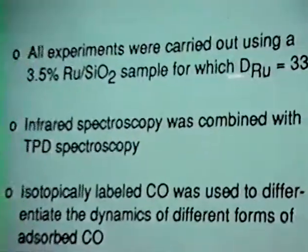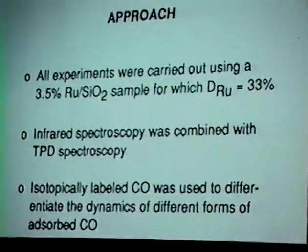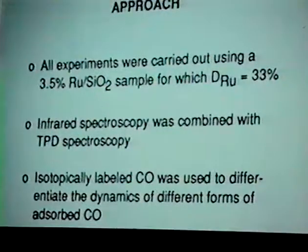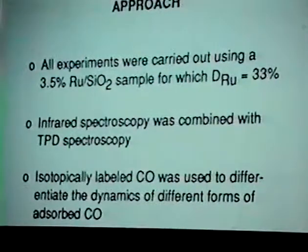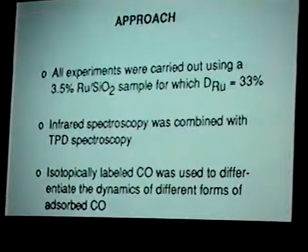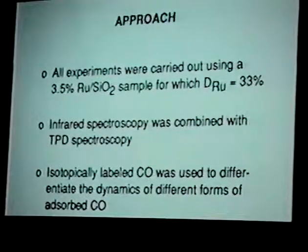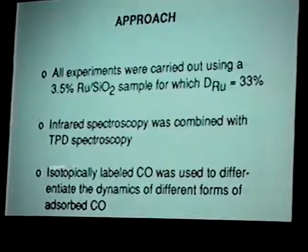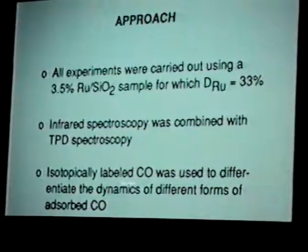The approach was to use a 3.5% ruthenium on silica sample. The dispersion for the sample is 33%, which is quite typical of what one achieves for silica as a support — it's difficult to achieve very high dispersions there. The principal tools that we have used are infrared spectroscopy applied in combination with temperature programmed desorption spectroscopy. A little bit later I'll show you combined TPD-IR spectra. And then to help unravel the nature of the sites, we've used isotopically labeled CO.